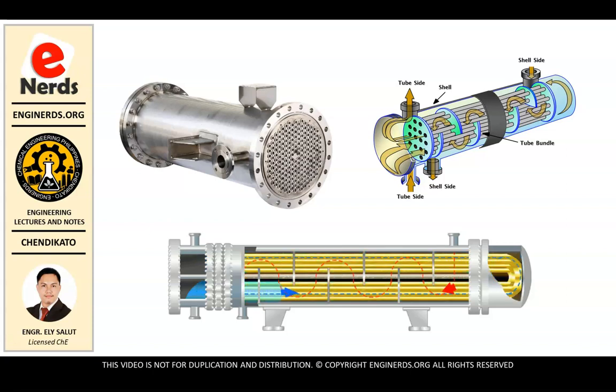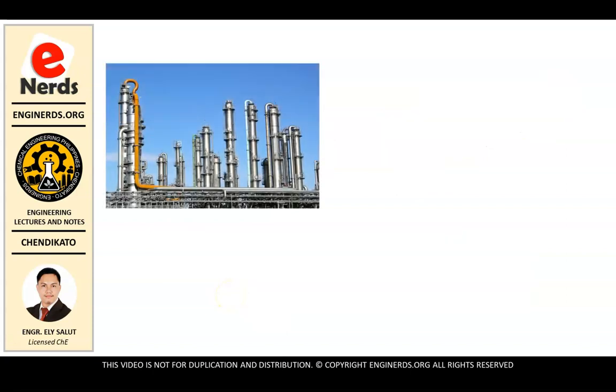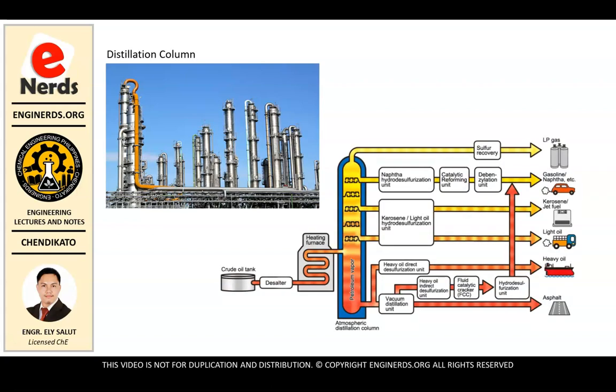And of course we see this in our books. This is actually a distillation column. This is the animation or figure that represents this. We have this atmospheric distillation column, and this is where we get what we use as LPG, gasoline, kerosene, light oil, heavy oil, and asphalt. These come from our distillation column.